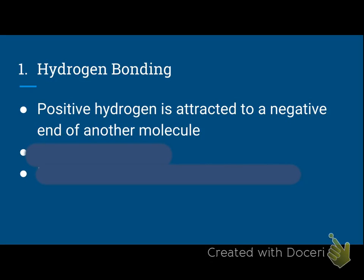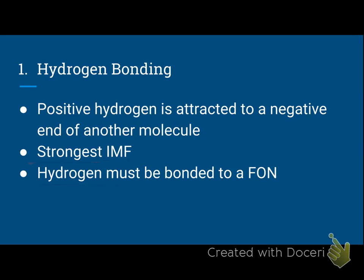Hydrogen bonding is the strongest of the intermolecular forces. Anytime you see IMF, that stands for intermolecular forces. In order to have a hydrogen bond, the hydrogen must be bonded to a FON — fluorine, oxygen, or nitrogen. If your hydrogen is bonded to a carbon, it's not a hydrogen bond. If your hydrogen is bonded to a sulfur, it's not a hydrogen bond. You have to have a FON.